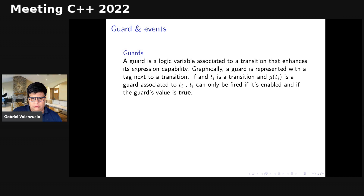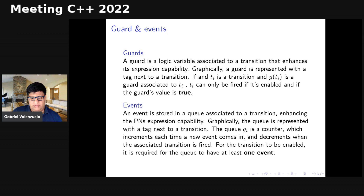We can extend the different types by using time and obtain new types of systems. The state equation is a vector product of the network. In simple terms, the next state M(t+1) is equal to the current state M(t) plus I·σ, where I is the incidence matrix of the network and σ is the firing vector. Guards are logical conditions assigned to a transition — when the guard is true, the transition is enabled to fire if all other conditions are met. Events are related to embedded systems: an event is stored in a queue associated with a transition, and when there is an event in that queue, the transition can be identified as enabled.